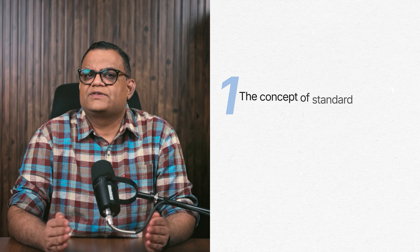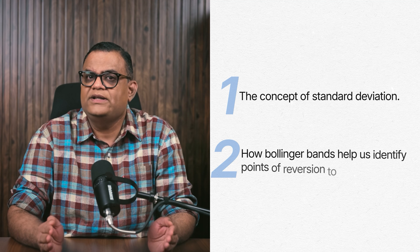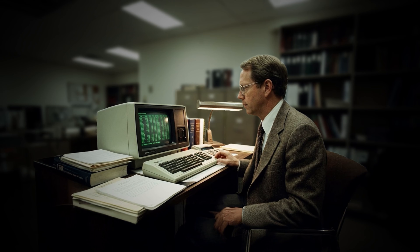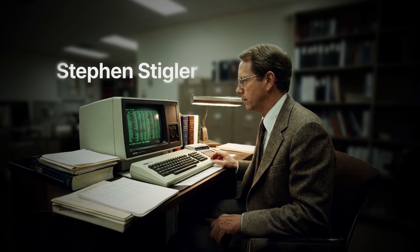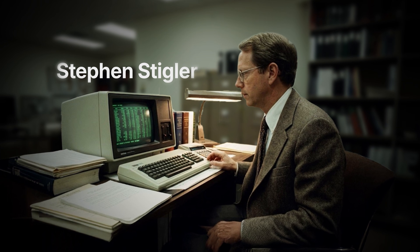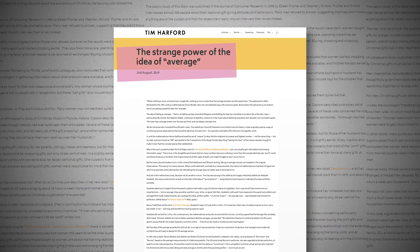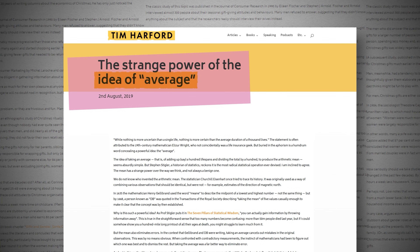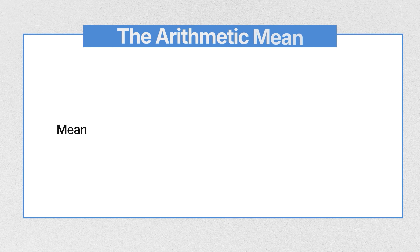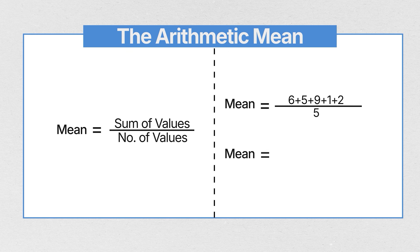In this episode, we will focus on two key ideas: the concept of standard deviation and how Bollinger bands help us identify points of reversion to mean. I would call standard deviation the second most important statistical measure after the mean. The mean is one of the simplest and, as statistician Steven Stigler says, perhaps the most radical statistical operation ever devised. It's a simple operation of adding up all the data points and dividing by the number of data points — it cannot get more simple and elegant.